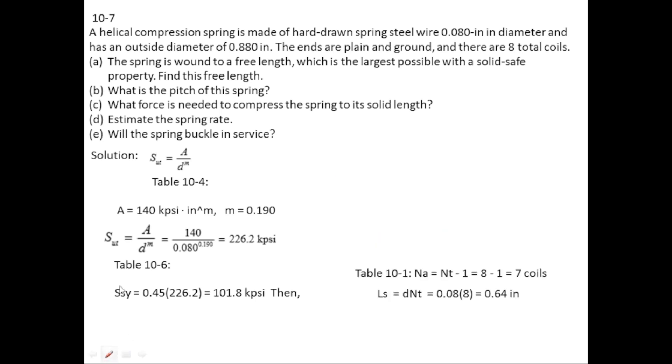This 0.88 is external diameter. So mean coil diameter is equal to external diameter minus wire diameter which is equal to 0.88 minus 0.08 which will give you 0.8. So mean coil diameter is 0.8 inches.